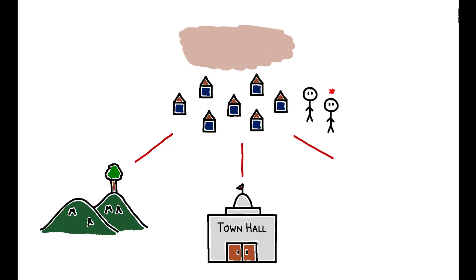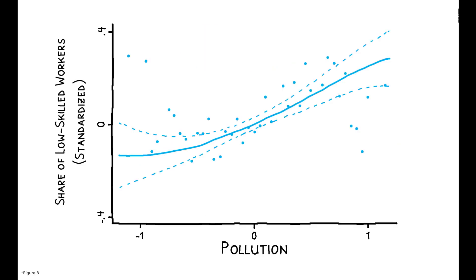To examine this more robustly, the authors estimate the relationship between pollution and neighborhood composition after controlling for a long list of neighborhood factors, including geographic features and distance from amenities and industries. And they find a strong positive relationship. A pollution differential equivalent to that between the 10th and 90th percentile in Manchester is associated with a 16 percentage point difference in the share of low-skilled workers.